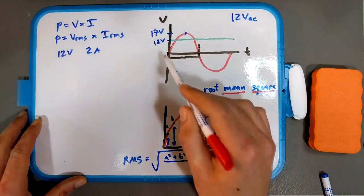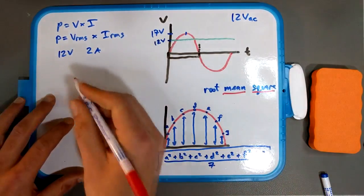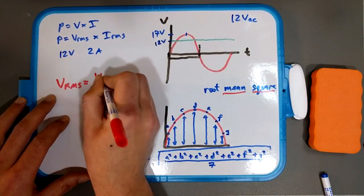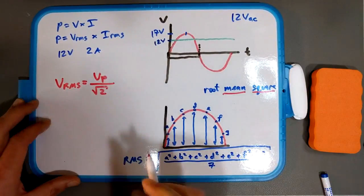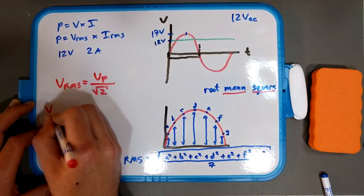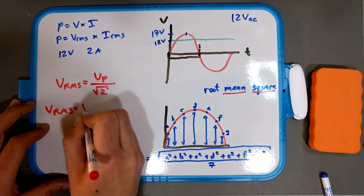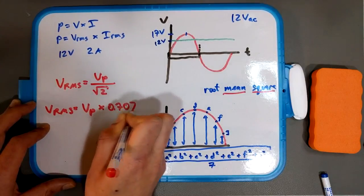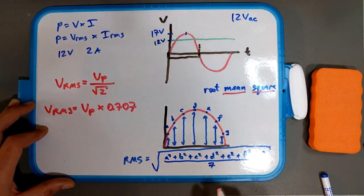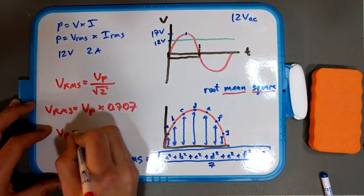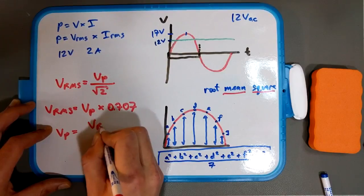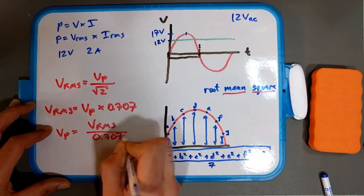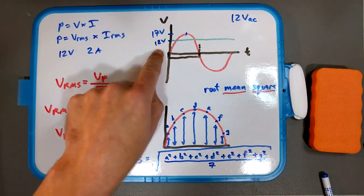So it turns out that for a pure sine wave, you can simply write the RMS voltage is equal to the peak voltage divided by the square root of two. But that actually simplifies to VRMS equals peak voltage times 0.707. Or you can say peak voltage equals VRMS over 0.707. Ta-da! And that's how we got our 12 and 17.